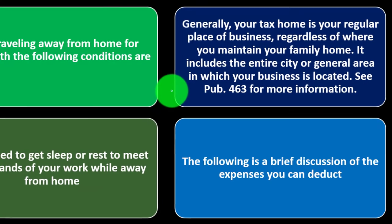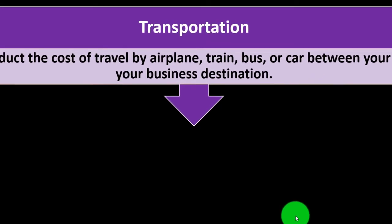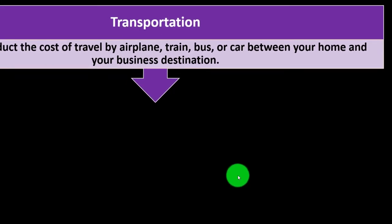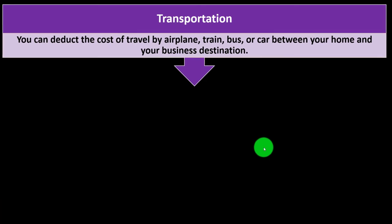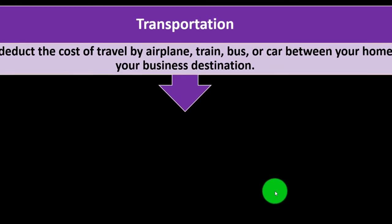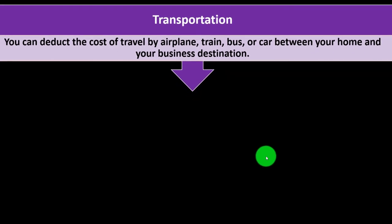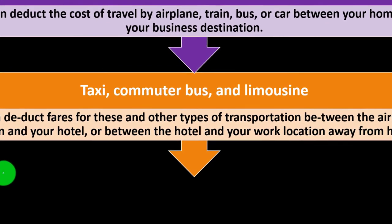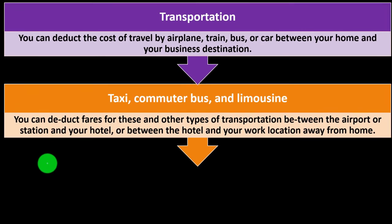Here's a brief discussion of expenses you can deduct. Transportation: you can deduct the cost to travel by airplane, train, bus, or car between your home and your business destination. Remember, it's a business destination — you're not going to the Bahamas just for vacation. Because it's a business trip, the transportation to get there would be ordinary and necessary and therefore potentially deductible.